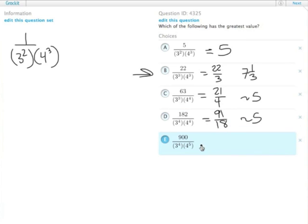Finally, answer choice E, 900 over this. Again, we have an extra 4, 2 extra 4s and an extra 3 in the denominator, so that's going to decrease it quite a bit. It ends up being 25 over 4, which is 6 and a quarter. Of them then, answer choice B ends up being the one with the greatest value.